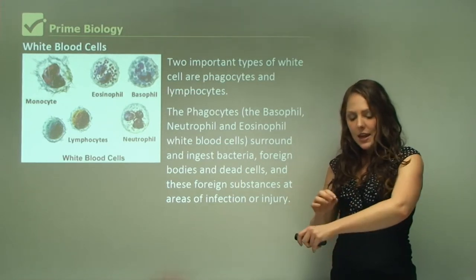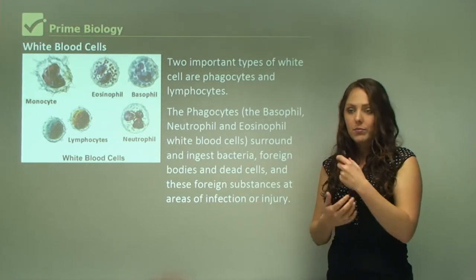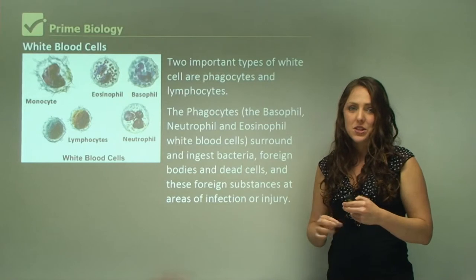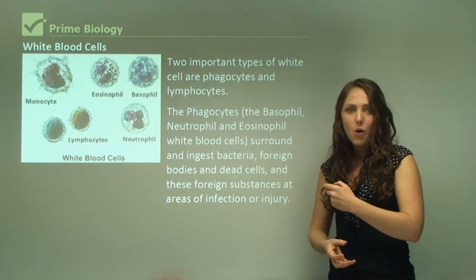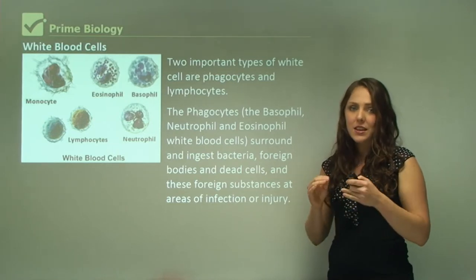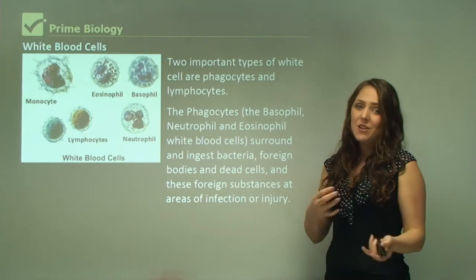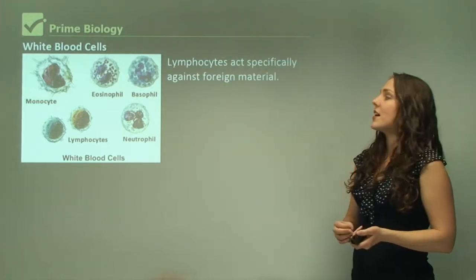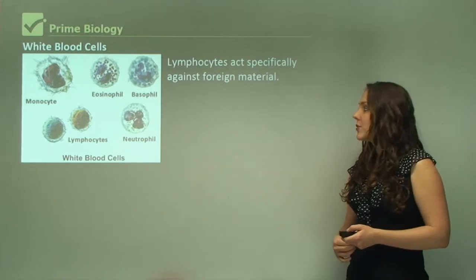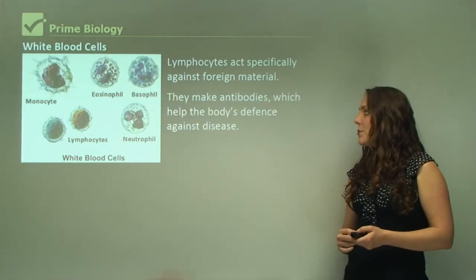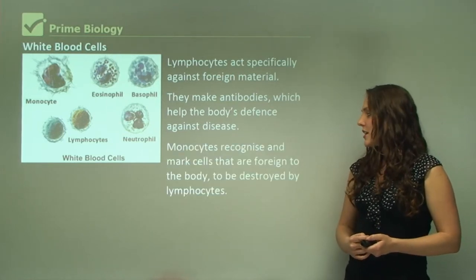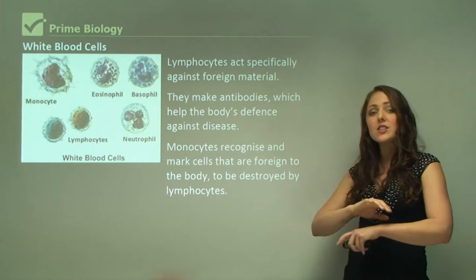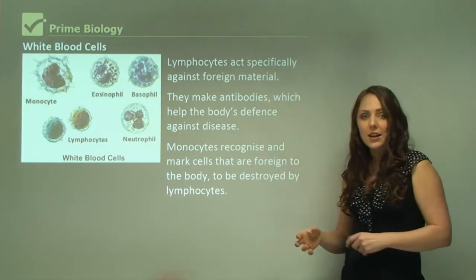A blister from a shoe or a burn is filled with pus, which is made of dead white blood cells. When you pop that blister you're releasing white blood cells that have done their job protecting you from infection and are now dead. Lymphocytes are a different type of white blood cell that act specifically against foreign material — they make antibodies which help the body's defense against disease. Monocytes recognize and mark cells that are foreign to the body to be destroyed by lymphocytes; monocytes don't destroy the foreign material themselves but place markers on it for the lymphocytes to destroy later.